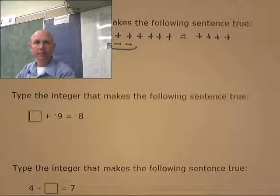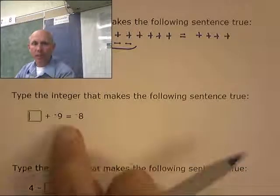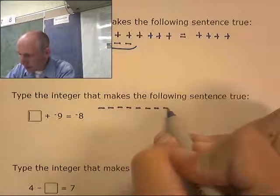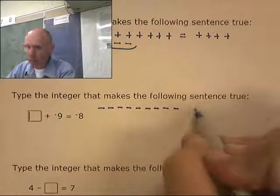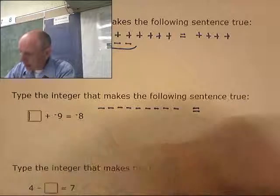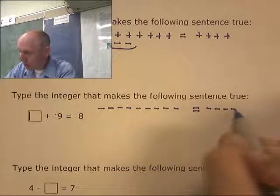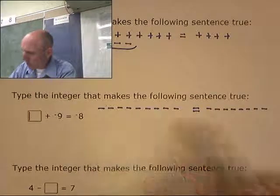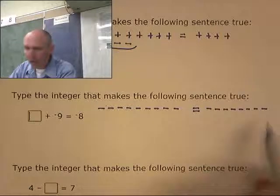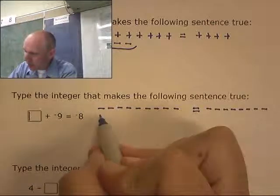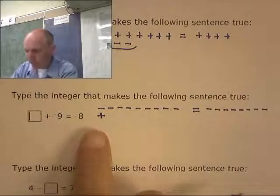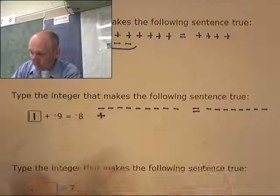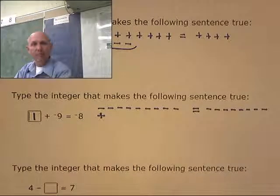Let's try this one. I have 9 negatives. I'm going to do something to it and end up with 8 negatives. So I have 9 negatives, but I only want 8 negatives. Somehow I have to get rid of one of these negatives. Well, if I do a positive, one of the negatives will go away and I'll be left with 8. So I need a positive 1. 1 plus negative 9 is negative 8. It's working.